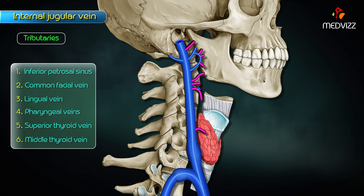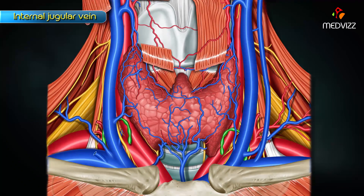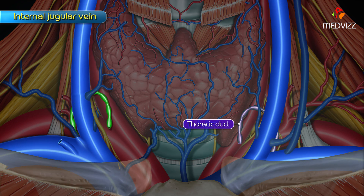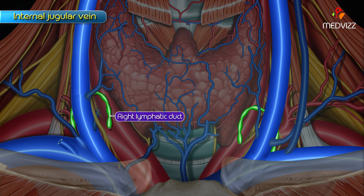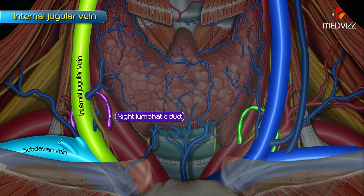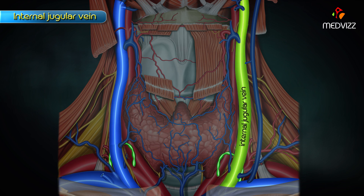One important point to note is that the thoracic duct opens into the angle of the union between the left internal jugular vein and the left subclavian vein. The right lymphatic duct opens similarly on the right side.